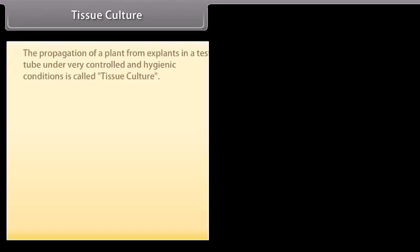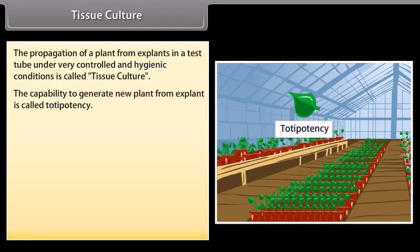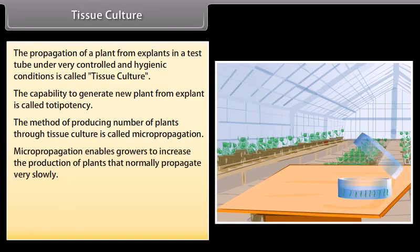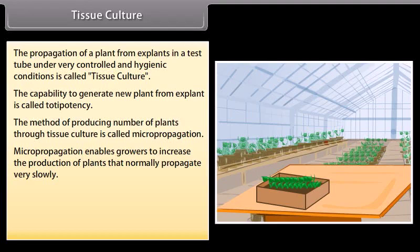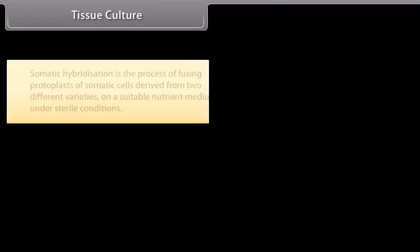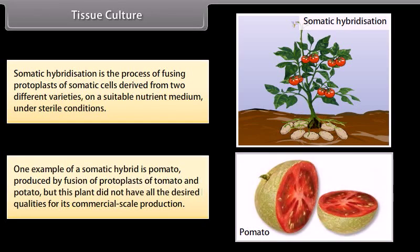Tissue culture: the propagation of a plant from explants in a test tube under very controlled and hygienic conditions is called tissue culture. The capability to generate a new plant from an explant is called totipotency. This method of producing plants through tissue culture is called micropropagation. Each plant developed through micropropagation will be genetically similar to the original plant and is called a somaclone. Somatic hybridization is the process of fusing protoplasts of somatic cells from two different varieties. One example of a somatic hybrid is pomato, produced by fusion of protoplasts of tomato and potato, though it did not have all desired qualities for commercial production.